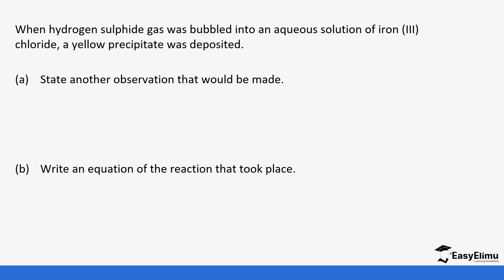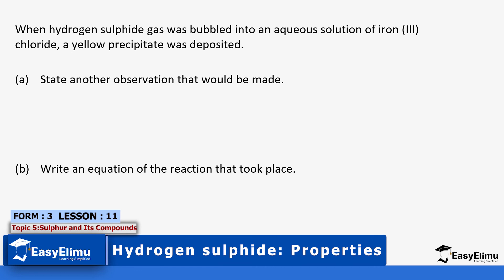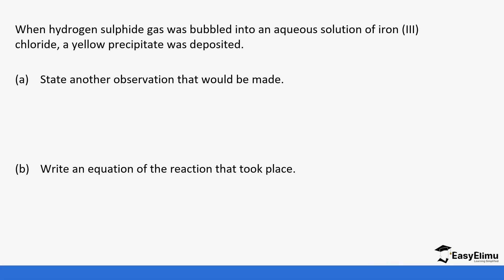Let's do one practice question before closing. When hydrogen sulfide gas was bubbled into an aqueous solution of iron(III) chloride, a yellow solid precipitate was deposited. The first question asks for another observation that would be made. We start with iron(III) chloride which is brown, so the brown iron(III) chloride solution will turn to green. Hydrogen sulfide acts as the reducing agent and iron(III) chloride acts as the oxidizing agent.